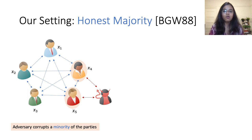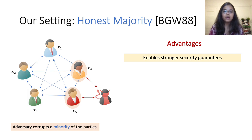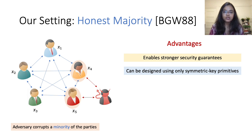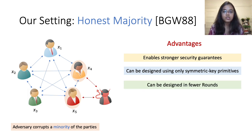In this work, we consider the honest majority setting, where the adversary is allowed to corrupt a minority of the parties. There are numerous advantages. For instance, the honest majority setting enables protocols with stronger security guarantees. Unlike the dishonest majority setting, protocols here can be designed based only on symmetric key primitives, which are more efficient than public key primitives. Moreover, it is possible to design protocols with fewer rounds, and this setting is truly justified because it often holds in practical applications where these protocols are expected to be deployed.